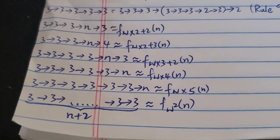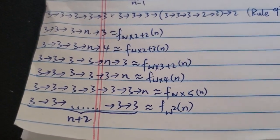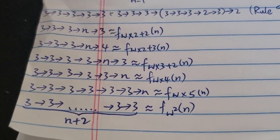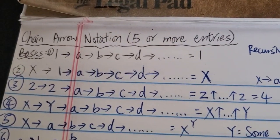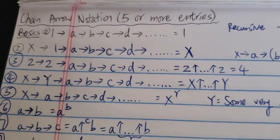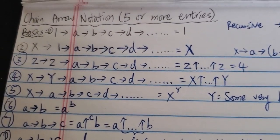Of course, there are some other extensions that people created, which makes it grow much faster. But that would be another video, maybe, if I want to make it. So anyway, this is chain arrow notations for 5 or more entries. So anyway, thanks for watching, and have a nice day.